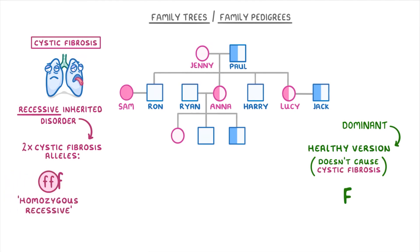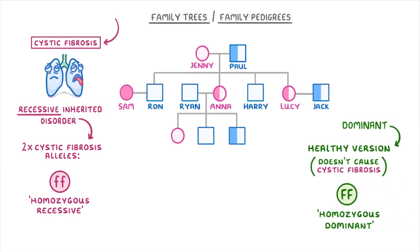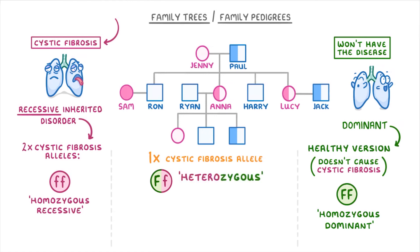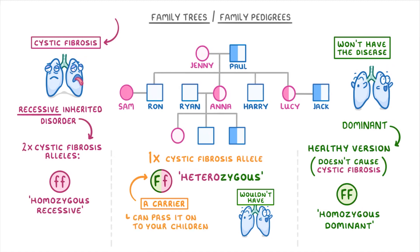So this means that if you have the homozygous recessive genotype, which is two lowercase f's, then you'll have the disease cystic fibrosis. If you have the homozygous dominant genotype of capital F capital F, then you won't have the disease. Finally, if you only had one cystic fibrosis allele and your other one was the healthy dominant allele — so you had the genotype capital F lowercase f — you'd be classed as heterozygous. Whilst you wouldn't have cystic fibrosis yourself, you'd be considered a carrier because you carry the allele for it and can pass that on to your children.